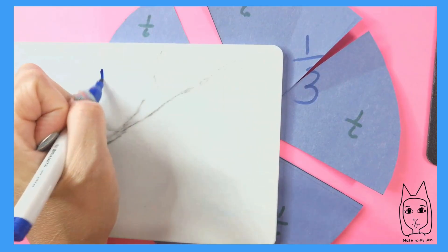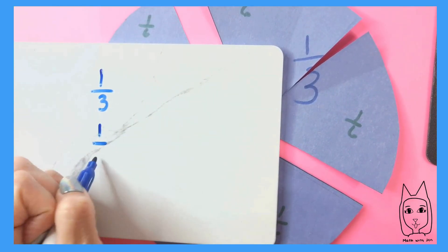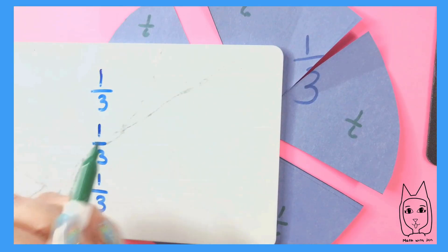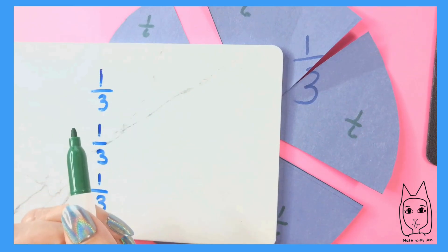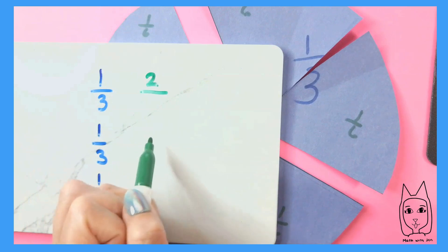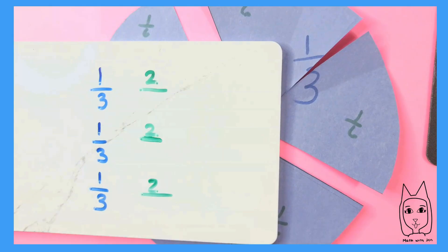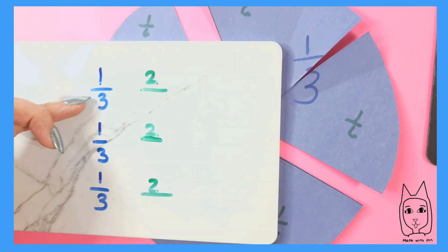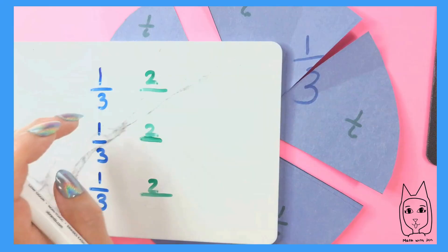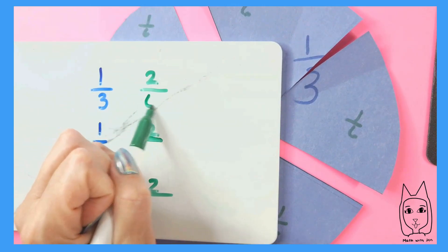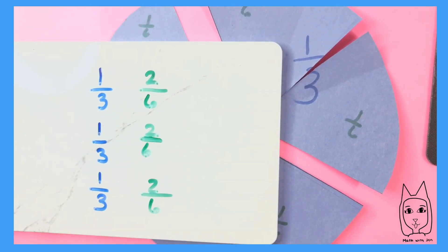Equivalent fractions are talking about the same part of the whole; they just might be divided in a different way. We used to have one-third — each of our parts were equivalent to one-third. Then we took each of these thirds and divided them into two equal parts, so now we had two equal parts instead of one. Because we divided each of these into two, we no longer have three parts needed to make a whole — we have six parts needed to make a whole.